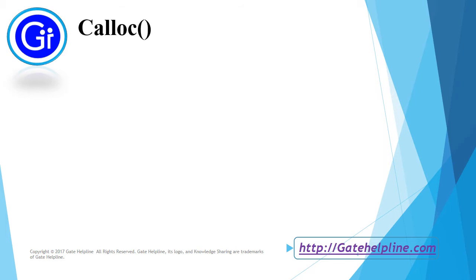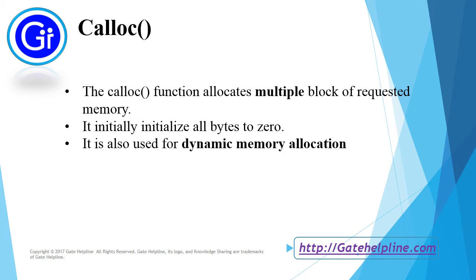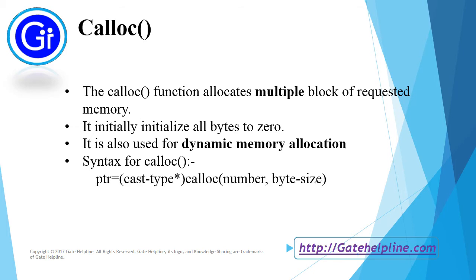Now we will see the calloc function. The calloc function allocates multiple blocks of requested memory. It initially initializes all bytes to 0. It is also used for dynamic memory allocation. The syntax for the calloc function is: ptr = (cast type*) calloc(number, byte_size), and it takes two parameters, that is number and byte size.